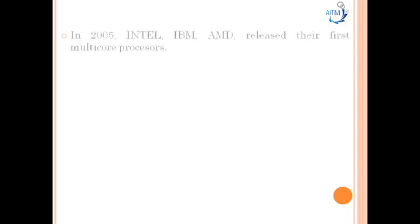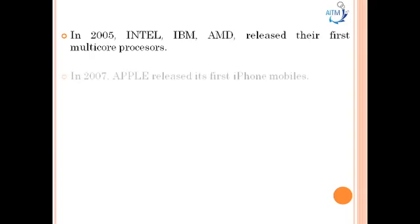In the year 2000, a second parallel revolution occurred in embedded systems. In the year 2005, Intel, IBM, and AMD released their first multi-core processors. By the year 2007, Apple released its first iPhone. In the year 2008, the first Android phone was launched and the Android code became an open-source operating system.